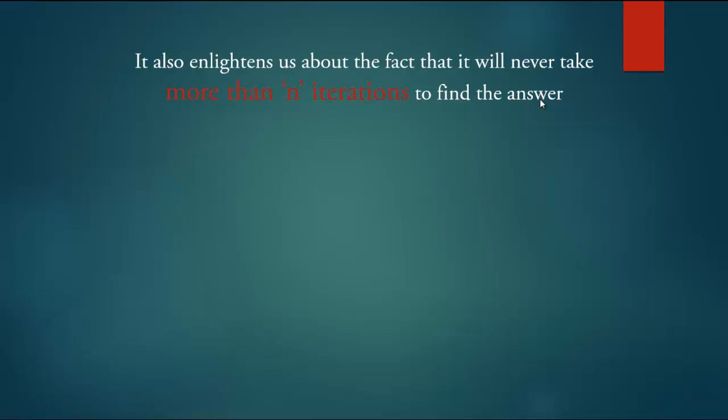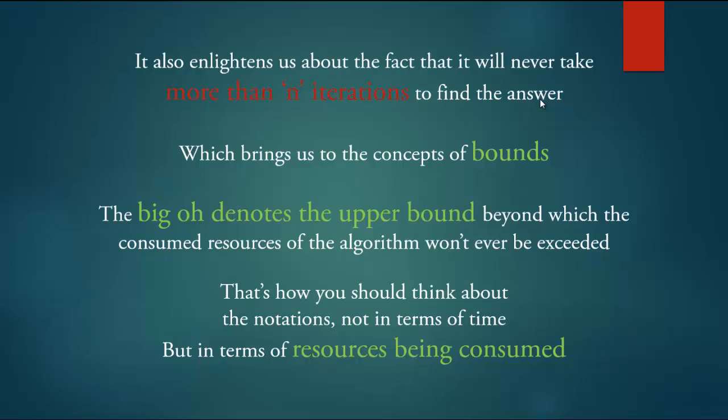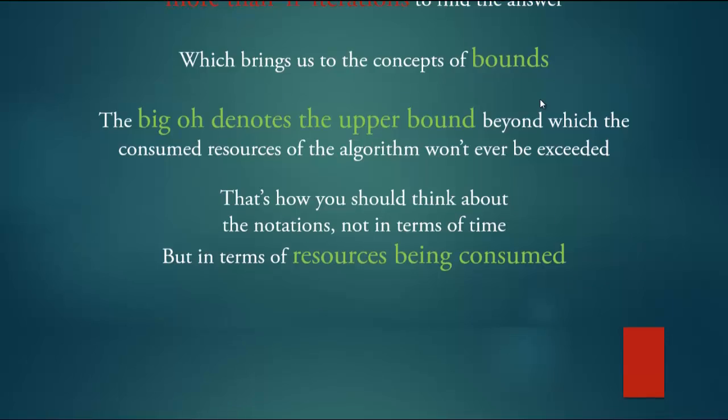But big O also specifies something else. It also enlightens us about the fact that it will never take more than n iterations to find the answer. Which brings us to the concept of bounds. The big O denotes the upper bound beyond which the consumed resources of the algorithm won't ever be exceeded. That's how you should think about the notations in terms of resources and not in terms of time.